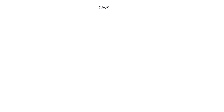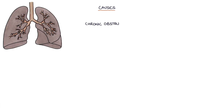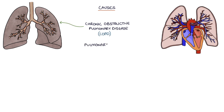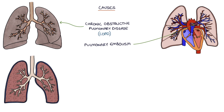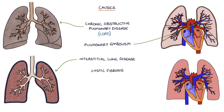What causes cor pulmonale? The most common cause is chronic obstructive pulmonary disease, or COPD. Other causes include pulmonary embolism, interstitial lung disease, cystic fibrosis, and primary pulmonary hypertension.